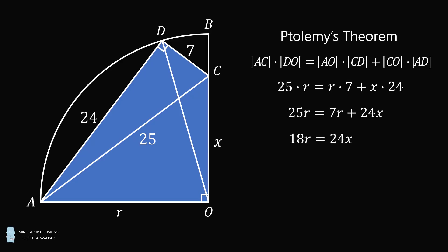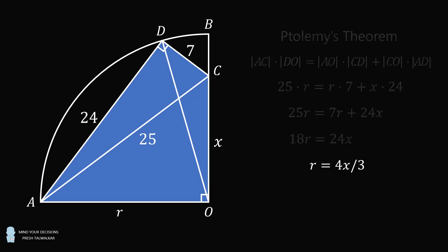We can solve this equation for R. 18R is equal to 24X, which means R is equal to 4X over 3. Let's substitute that value in.